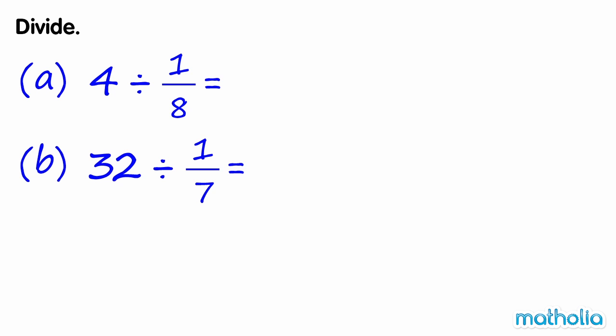Divide. A. Find four divided by one-eighth. One-eighth is a unit fraction. So we can write, four divided by one-eighth is equal to four times eight, which equals thirty-two.